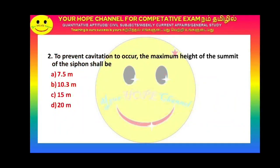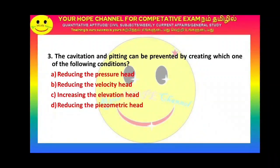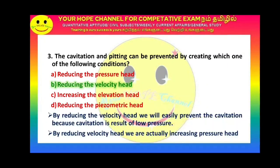Next question: To prevent cavitation and pitting, the answer is option D — reducing the velocity head. Pitting is the deterioration of piping material due to water force. By reducing the velocity head, the pressure head is increased, which prevents cavitation.